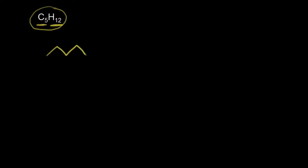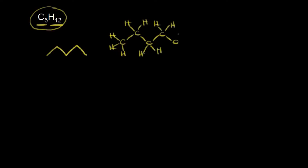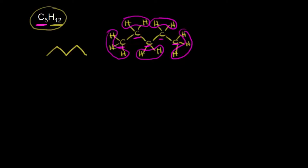We need five carbons, so for our first isomer, we could just draw five carbons in a chain. Let's draw out those five carbons and double check that we have the correct number of hydrogens. The carbon on the far left has three hydrogens, the next carbon has two, same with the next, two for the next, and finally three hydrogens for the last carbon. Counting up: five carbons gives us C5, and three plus two plus two plus two plus three gives us 12 hydrogens. So C5H12 is the molecular formula for this compound.